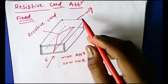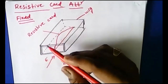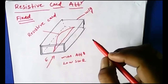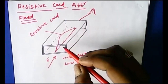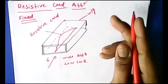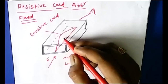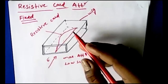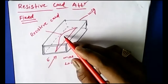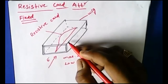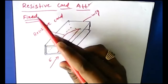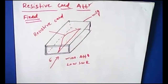The major disadvantage of the fixed resistive card attenuator is that whatever attenuation is achieved is fixed. If you want a different attenuation level, you cannot simply adjust it — you must change the dimension of the resistive card. It cannot be varied; once the dimensions are fixed, the attenuation is fixed.